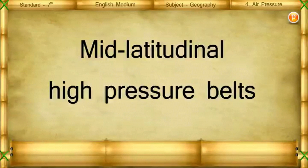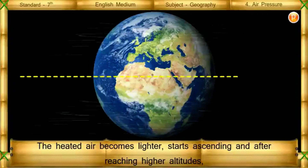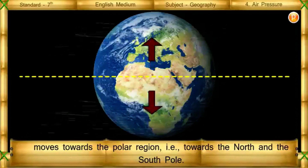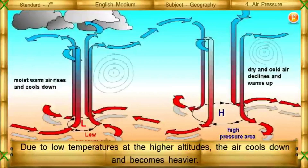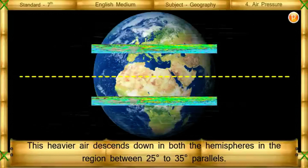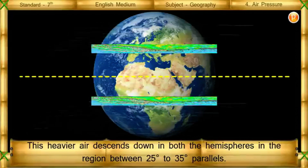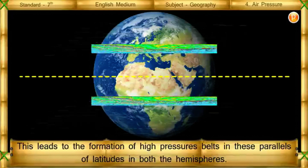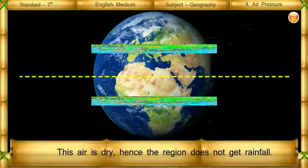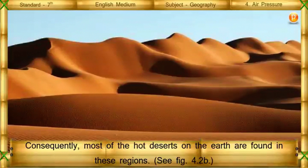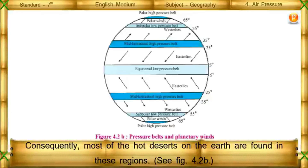Mid-latitudinal high pressure belts: The heated air becomes lighter, starts ascending, and after reaching higher altitudes, moves towards the polar region — that is, towards the north and south poles. Due to low temperature at higher altitudes, the air cools down and becomes heavier. This heavier air descends in both hemispheres in the region between 25 degrees and 35 degrees parallels. This leads to the formation of high pressure belts in these parallels in both hemispheres. This air is dry; hence, the region does not get rainfall. Consequently, most of the hot deserts on Earth are found in these regions. See figure 4.2b.